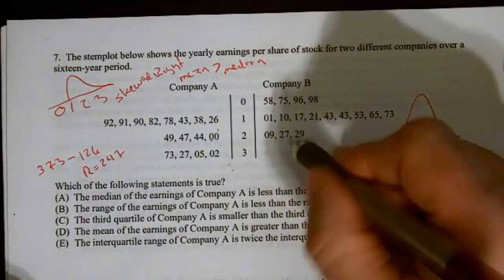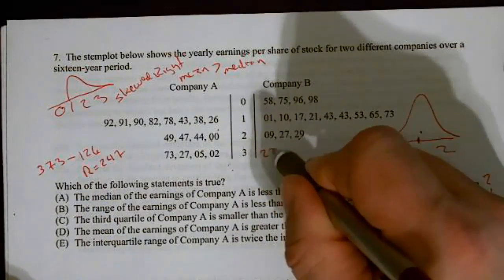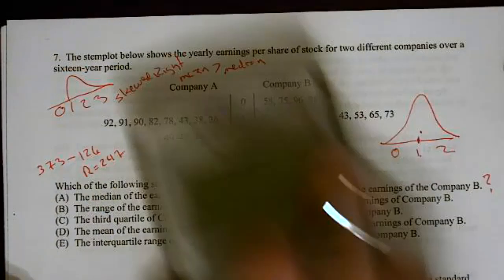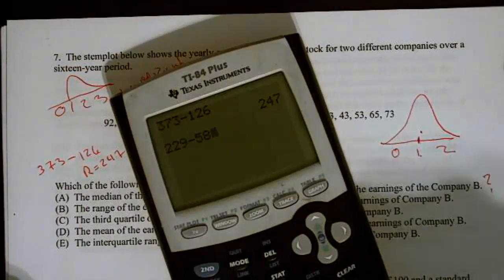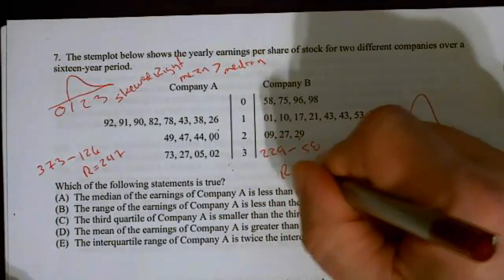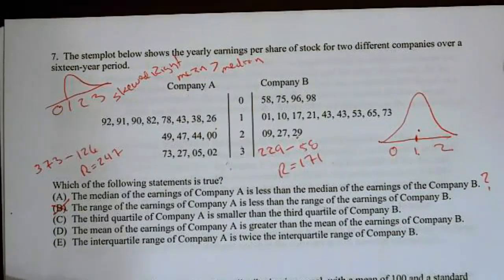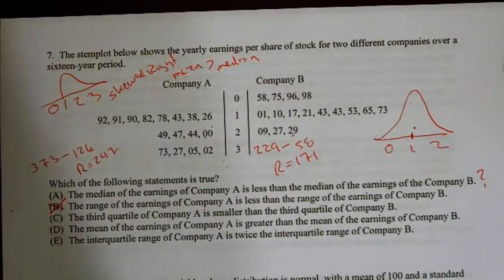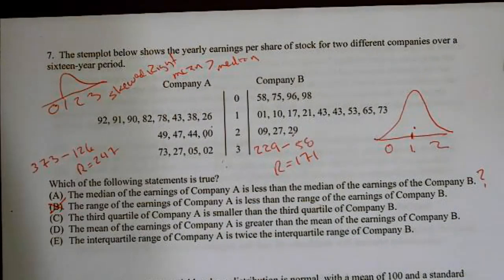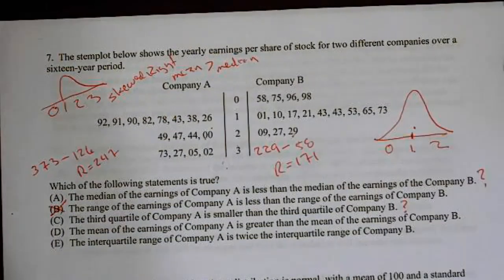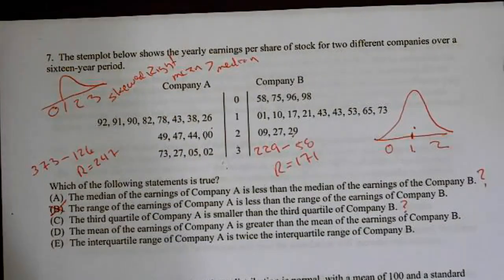So 229 minus 58, that's 171. The range of company A is less than B? That's false, that's clearly wrong. The third quartile of company A is smaller than the third quartile of company B? That's going to require some work. I could put all the data in the calculator and figure it out, but it's skewed. So if it's skewed, that's probably false. But once again, since I didn't do the work, I'm going to put a question mark and keep going and see if I can find an easier answer.